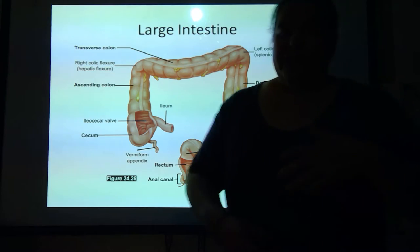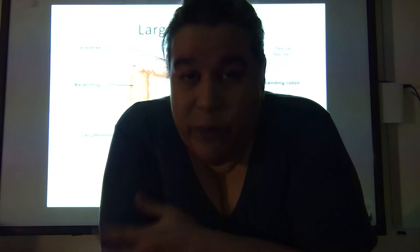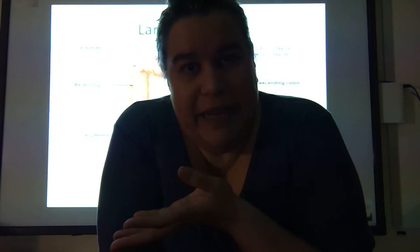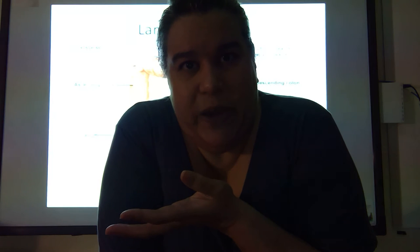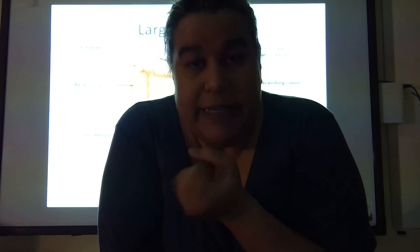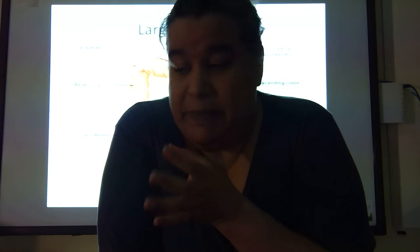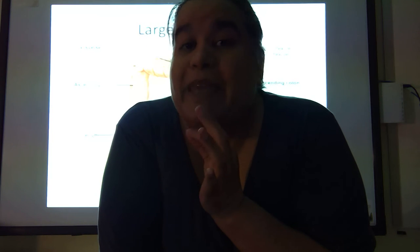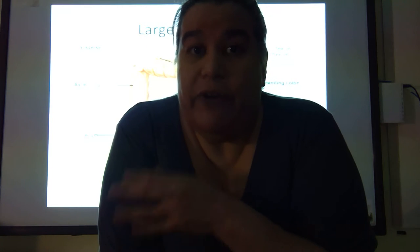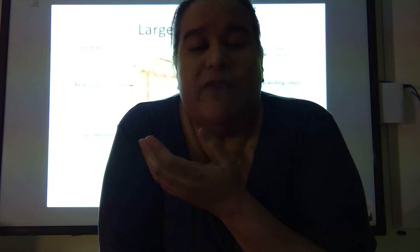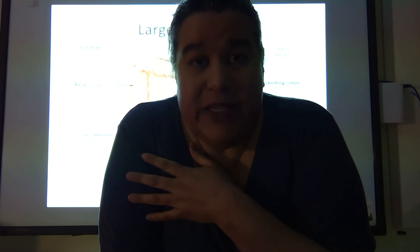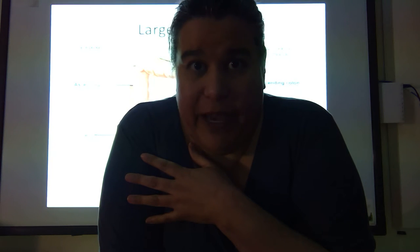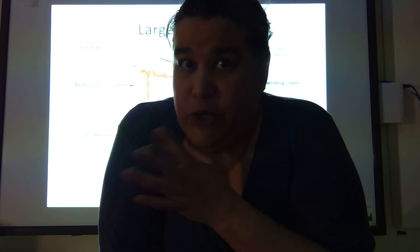The internal anal sphincter is made out of smooth muscle, meaning that we have no control over it. The minute that fecal material hits it, we feel we need to go to the bathroom because it relaxes automatically — something hits it and it relaxes. The external anal sphincter, however, is skeletal muscle, meaning that it is voluntarily controlled. This is the one that when we feel like we need to go but we're not in a good place, we close it and keep it closed until we can actually get to the bathroom and go.